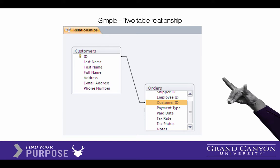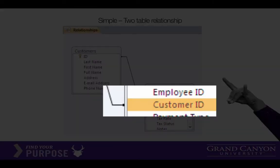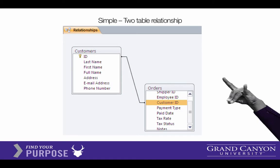The first slide we have here is the simplest demo. It is showing a basic two-table relationship between customer and orders. You can see that the foreign key on customer ID is attached to the first table.